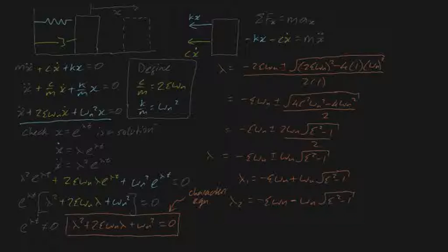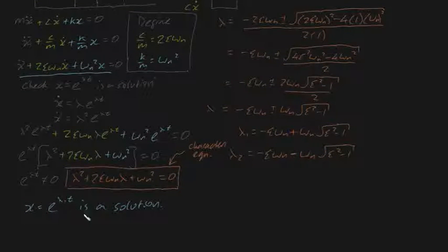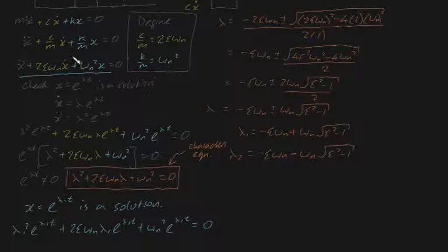What we've essentially shown is that x equals e to the lambda 1 t is a solution. To really hammer down this point, that means if I substitute x equals e to the lambda 1 t into this equation, we get zero: lambda 1 squared e to the lambda 1 t, plus 2 zeta omega_n times lambda 1 e to the lambda 1 t, plus omega_n squared e to the lambda 1 t equals zero.